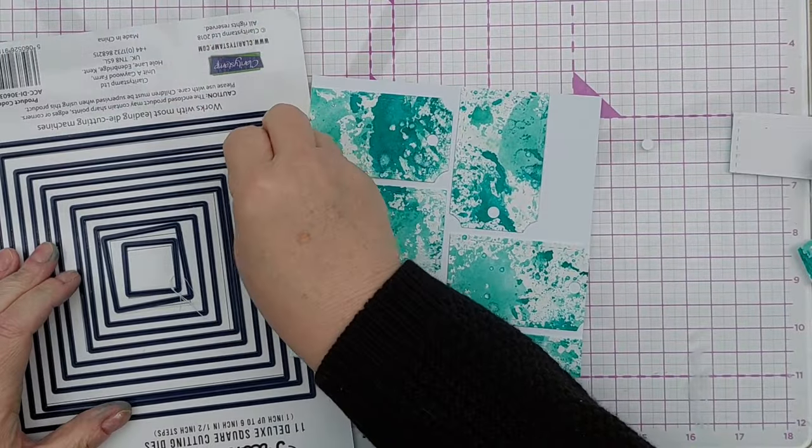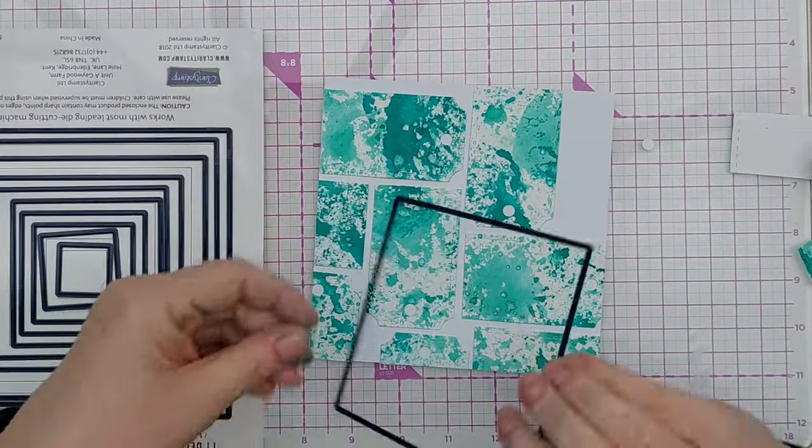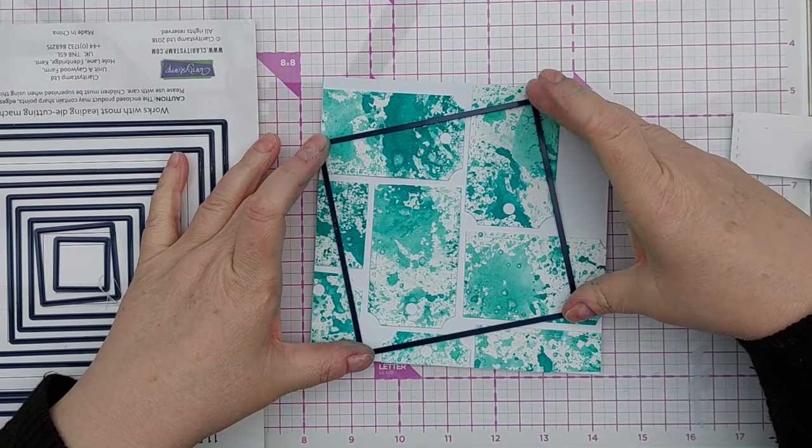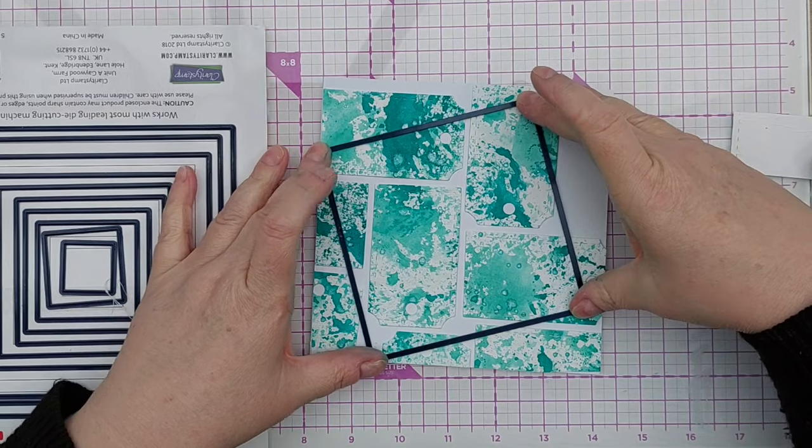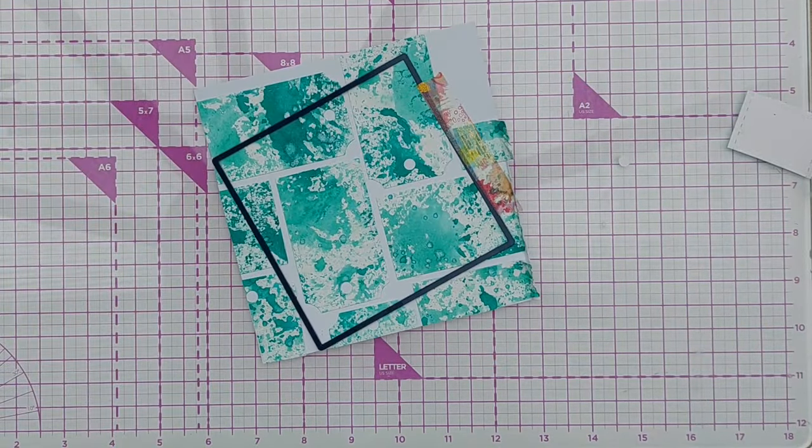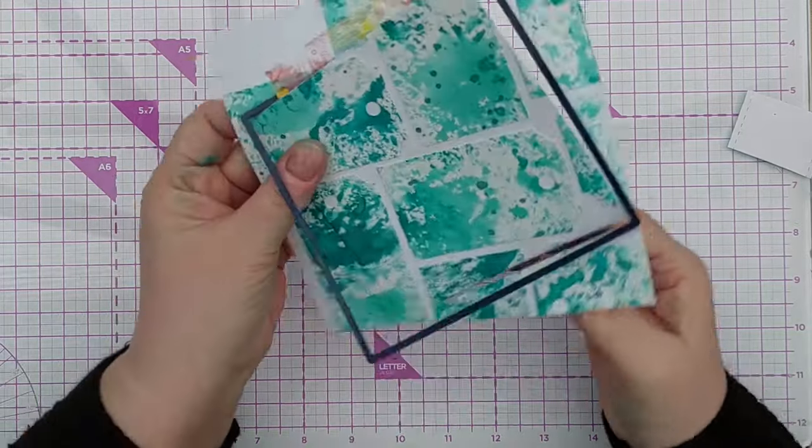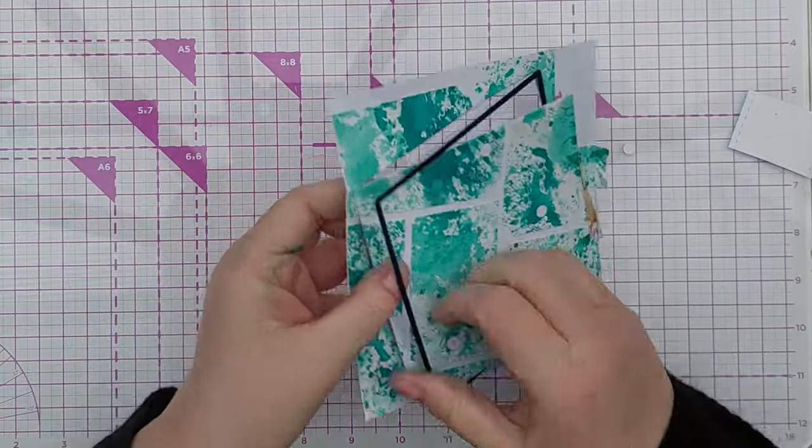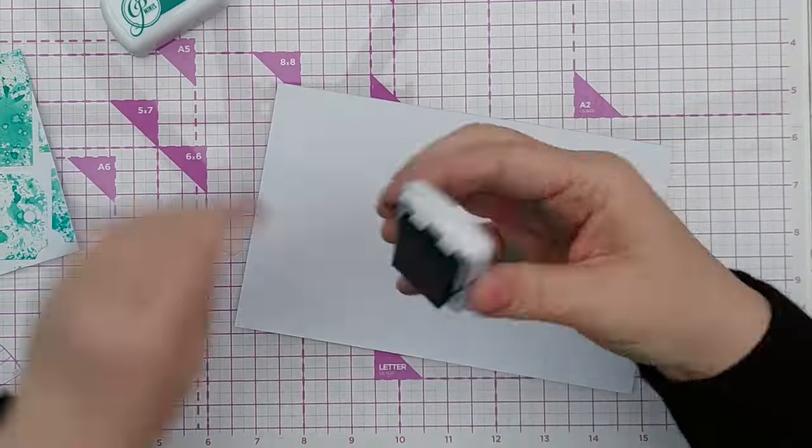I then brought in a square die and placed this on top of my tags to cut them out at a bit of a jaunty angle. I stuck that down with a bit of washi tape and then ran it through my Cuttlebug die cutting machine and I ended up with a lovely square filled with my smushed tags.